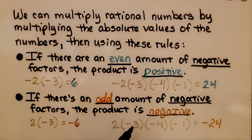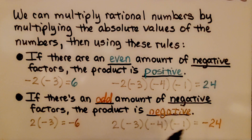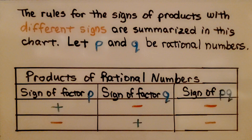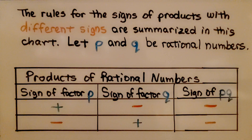Here we have a positive and three negative factors. Three negative factors is an odd amount, so we have a negative 24 — that's a negative product. The rules for signs of products with different signs are summarized in this chart. We're going to let p and q be rational numbers, so these are the products of rational numbers.